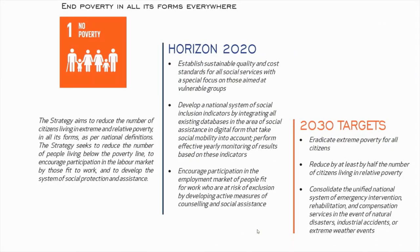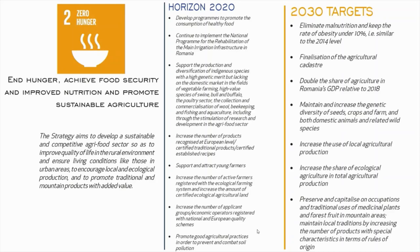The Strategy Goal No Poverty aims to end poverty in all its forms, reducing the number of citizens living in extreme and relative poverty, encouraging participation in the labor market by those fit to work, and developing the system of social protection and assistance. The Strategy Goal Zero Hunger aims to end hunger, achieve food security, improve nutrition and promote sustainable agriculture — developing a sustainable and competitive agri-food sector, encouraging local and ecological production, and promoting traditional and mountain products with added value.